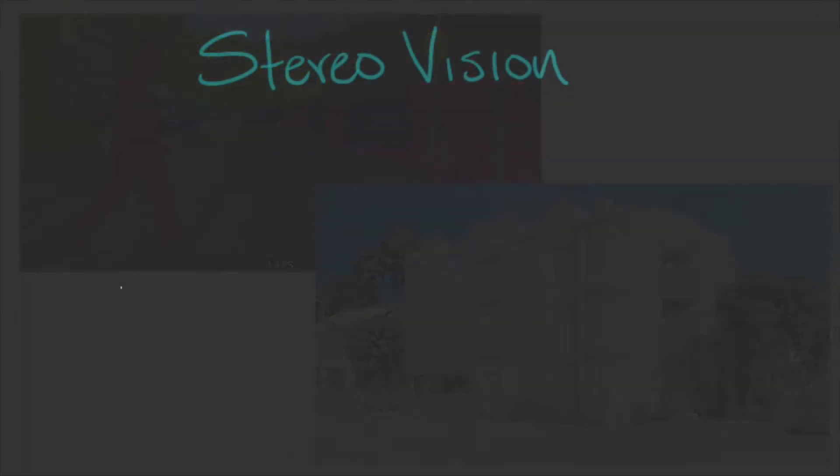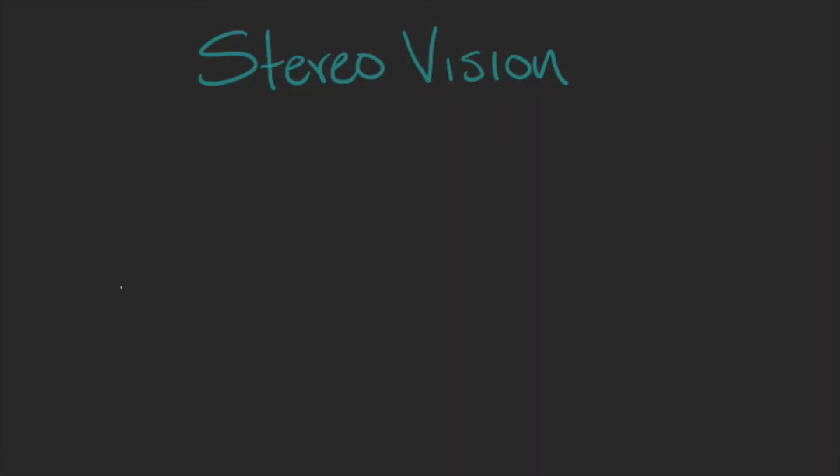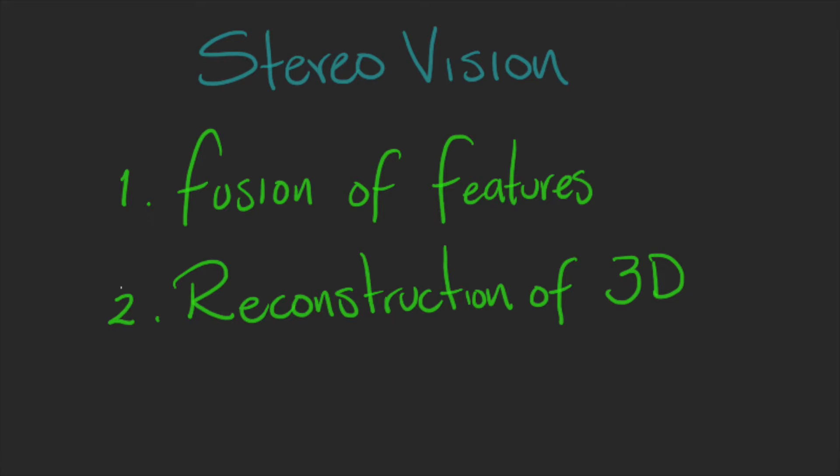In general terms, StereoVision involves two main processes: the fusion of the features observed on each camera and the reconstruction of their three-dimensional representation.